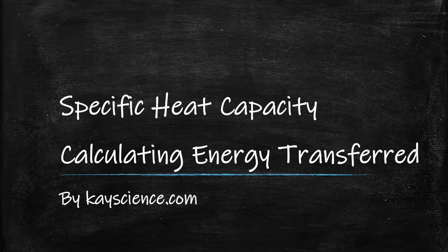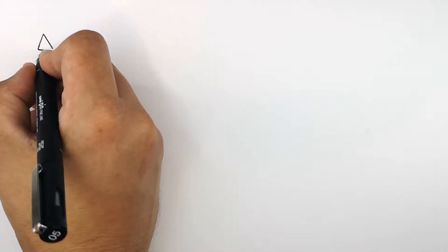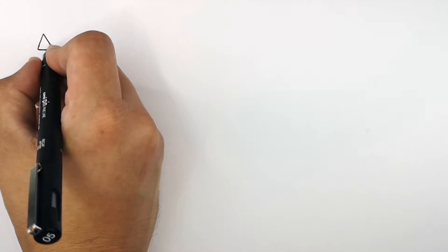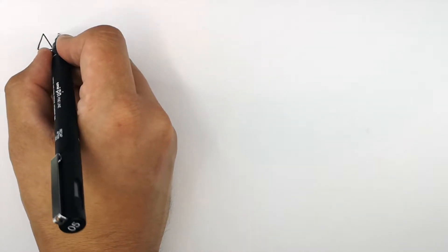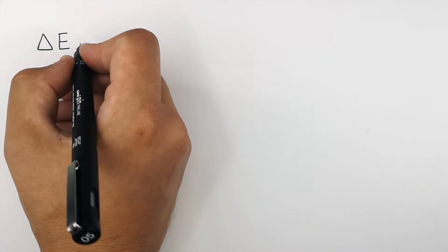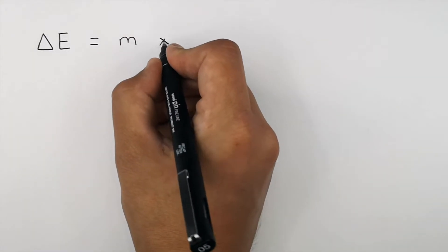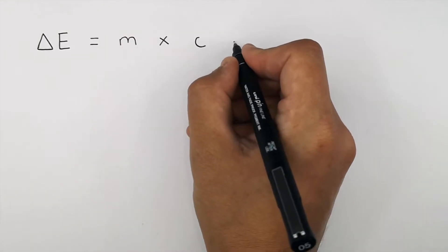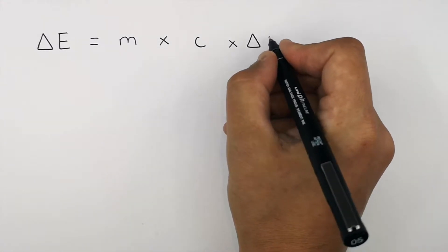Using the specific heat capacity equation to calculate the energy transferred. The formula linking energy transferred into or out of an object, the mass of the object, the specific heat capacity of the object, and the temperature change of the object is: change in energy transferred E equals the mass M, times C, the specific heat capacity, times the change in temperature, delta theta.